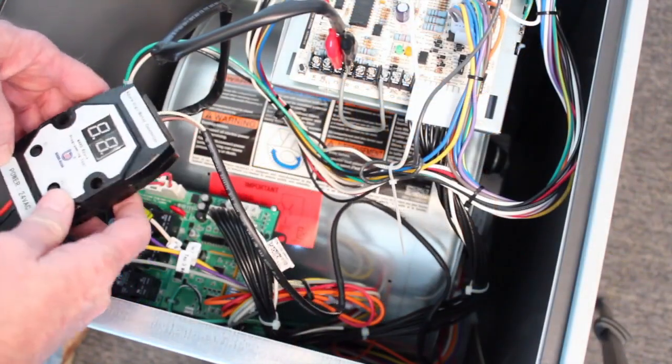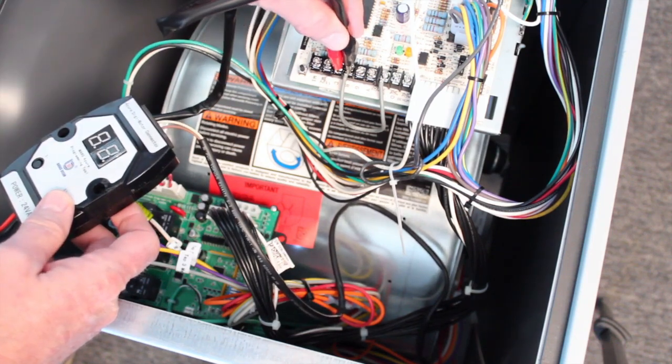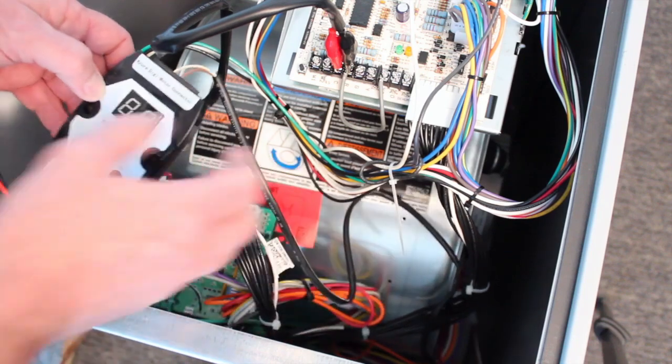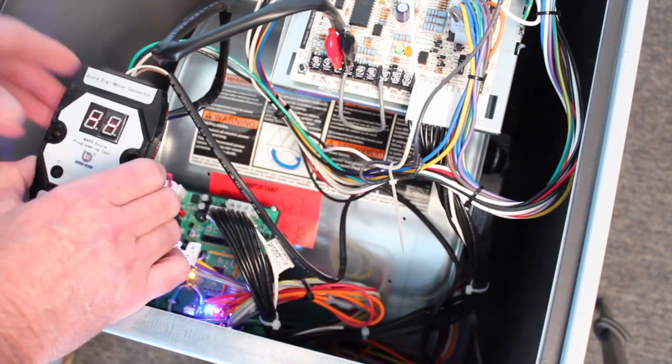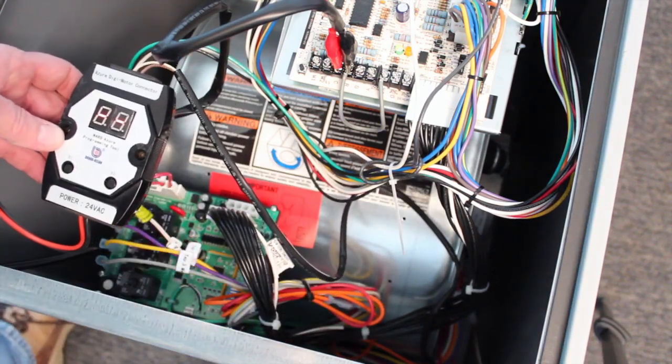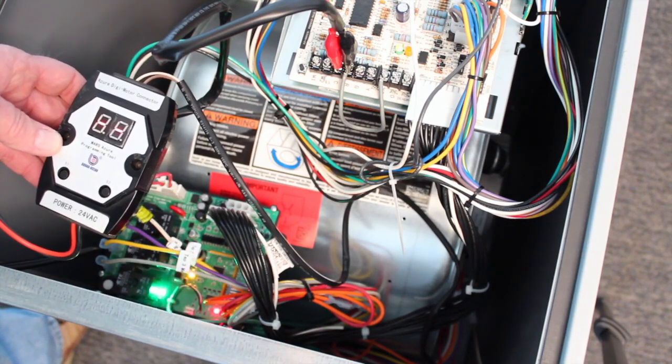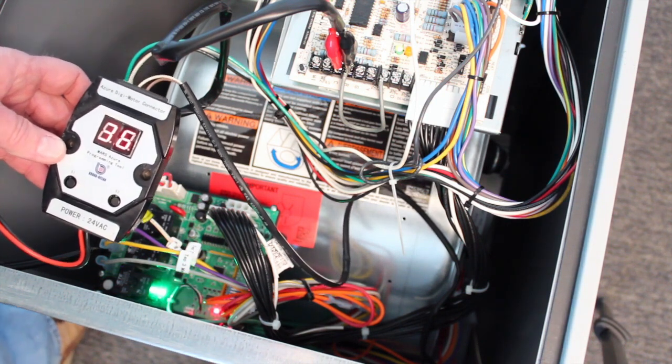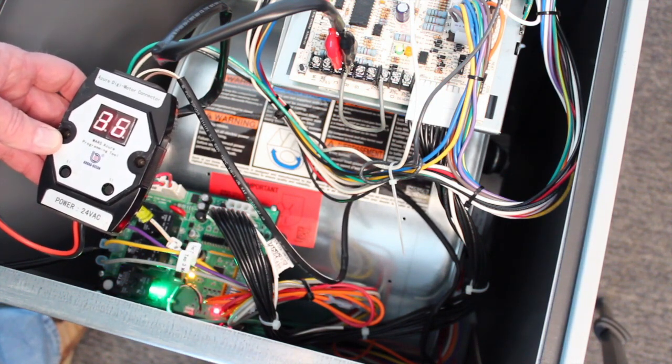With the power off, I've got the programmer attached to a 24 volt source and the other end is plugged in to the Azure motor. We'll flip the power on to the unit. The programmer is going to display the amount of torque that the motor is currently applying on this particular speed tap. So right now it's at 36% of its maximum torque.